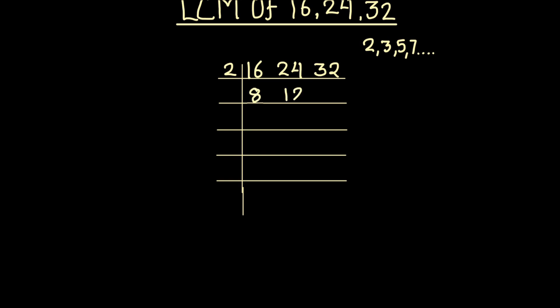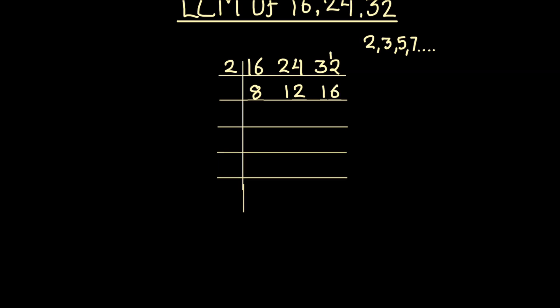Dividing all three numbers by 2: 2 times 8 is 16, 2 times 12 is 24, and 2 times 16 is 32. This gives us 8, 12, and 16. Again we can use 2 to divide the three numbers: 2 times 4 is 8, 2 times 6 is 12, and 2 times 8 is 16.